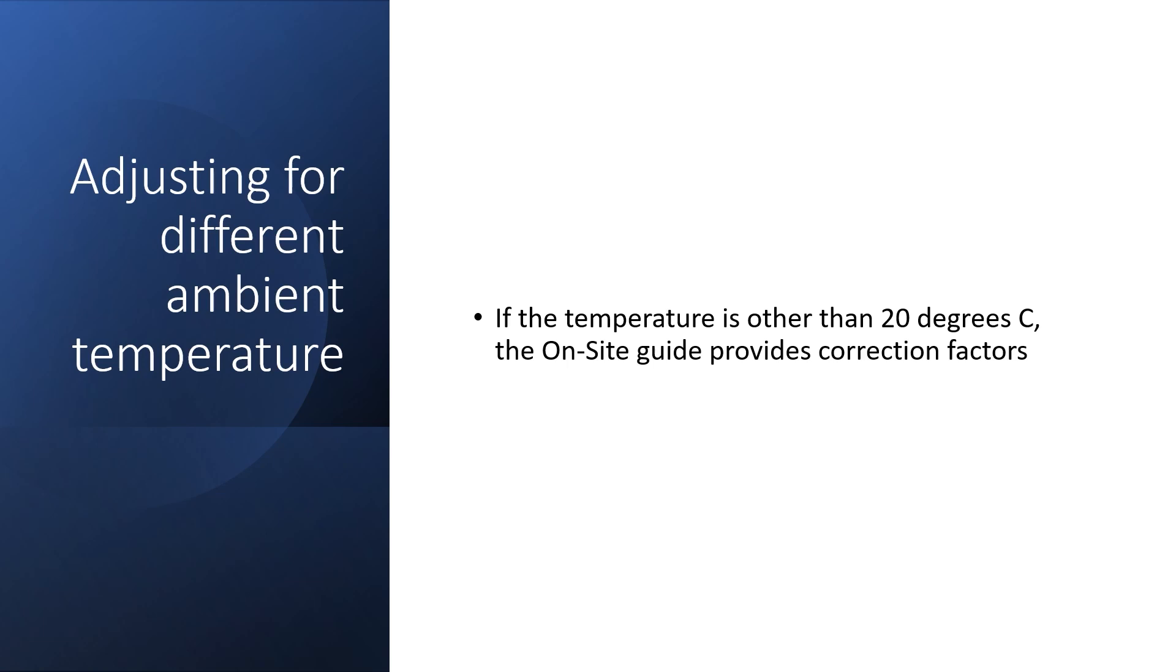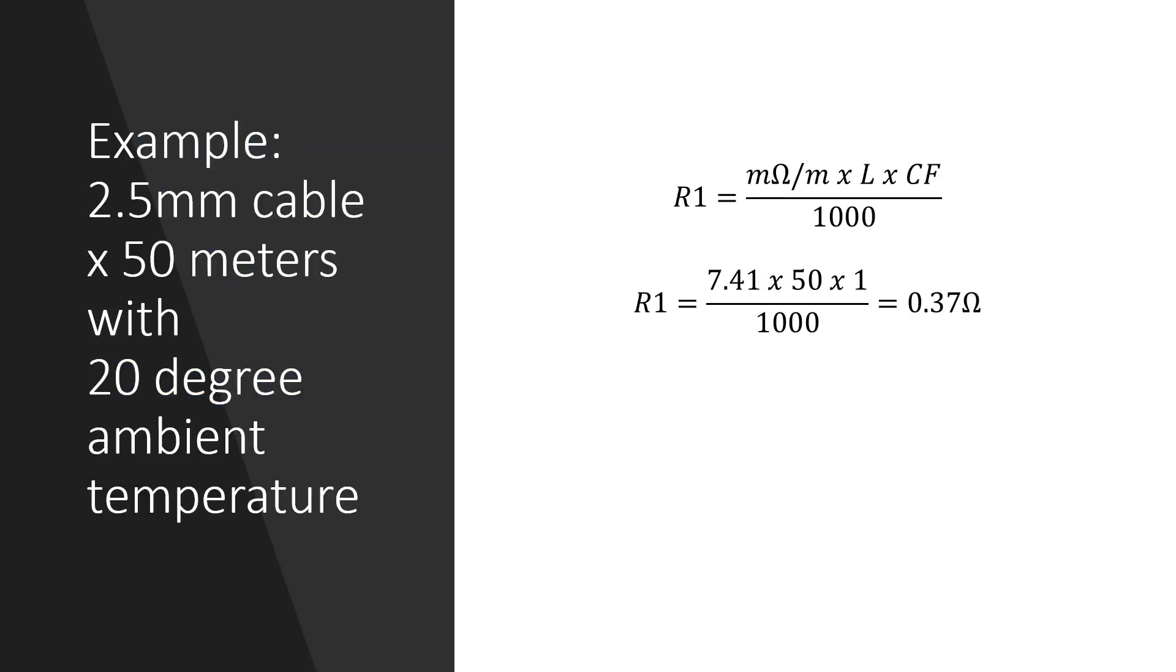So if we assume the ambient temperature is 20 degrees then we can simply work out the end-to-end value by multiplying the length by the value for milliohms per meter and then dividing by 1000.